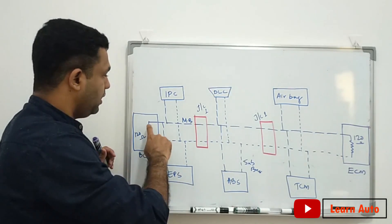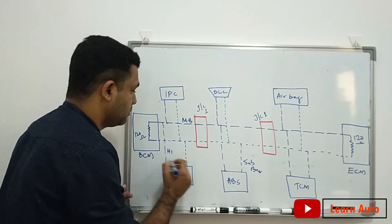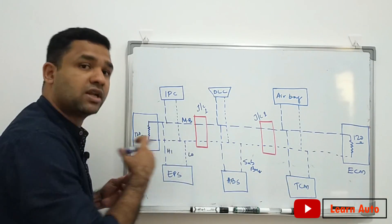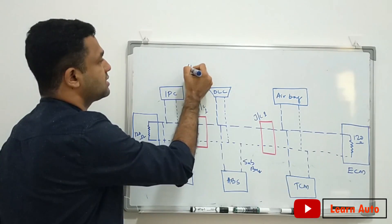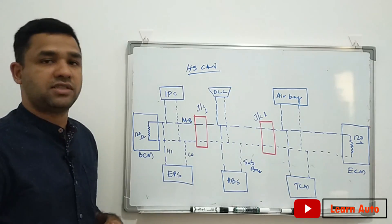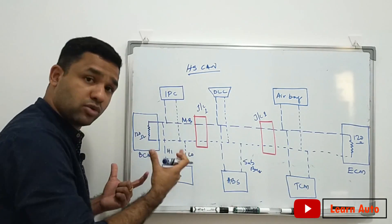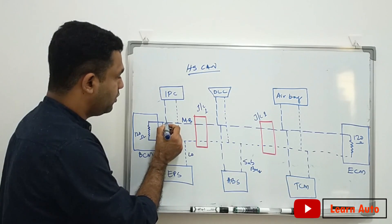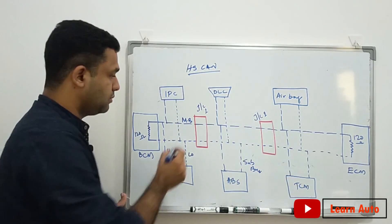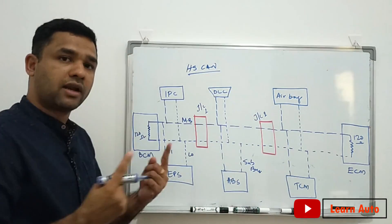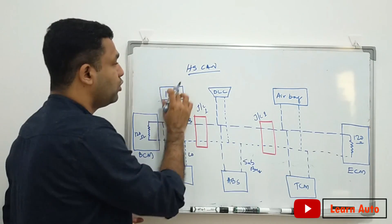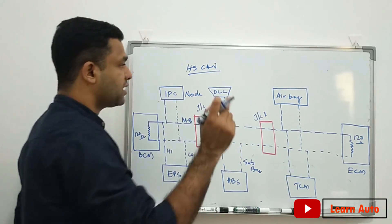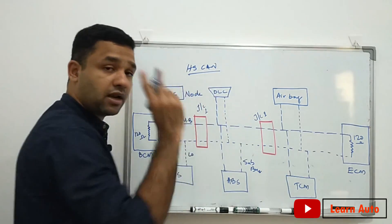In this one wire, we have a CAN-high and a CAN-low. This is the high speed CAN. If we have a CAN-high and CAN-low voltage, it is a twisted pair wire. These are the nodes — each node has a CAN-high connection and a CAN-low connection.